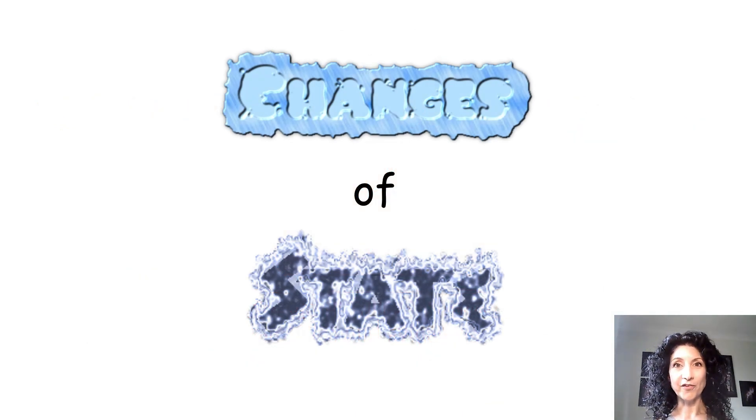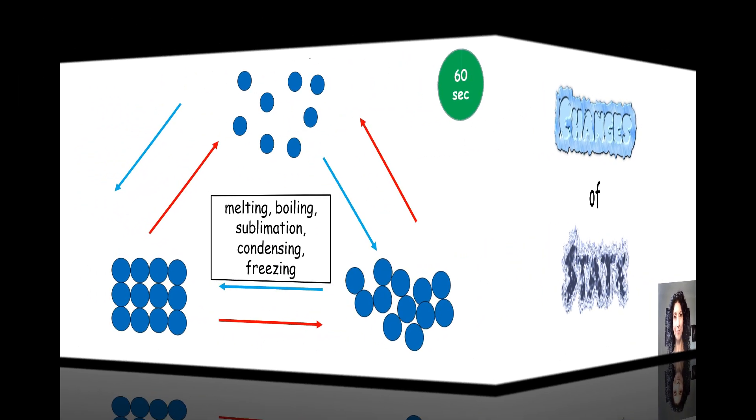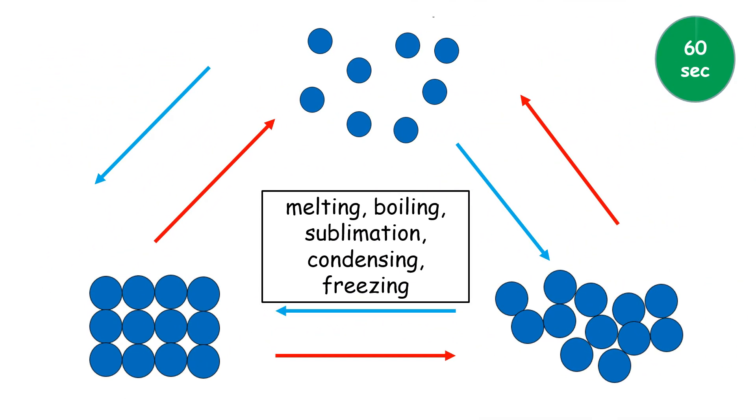As we saw from our water demonstration, substances are not fixed in one state. They can change from one state to the other. Now we are going to look at changes of state and how they are caused. It would be helpful for you to draw a diagram for the next section. Copy the particles for solid at the bottom left, gas at the top, and liquid bottom right, and draw two arrows going from one to the other. Use the words in the centre to label each arrow with the correct name for each change of state.